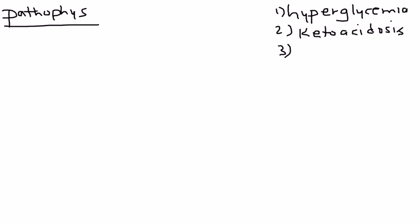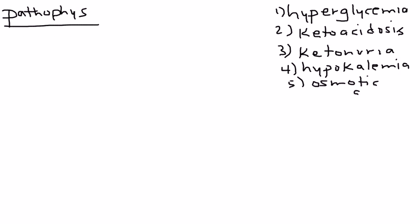The next thing I'm going to try to explain is ketonuria, increased ketones in the urine. Number 4 is hypokalemia, decreased potassium in the blood. And finally, osmotic diuresis. So these are all components of DKA.